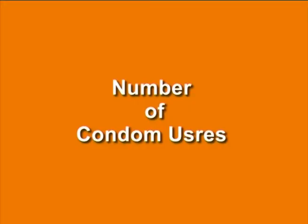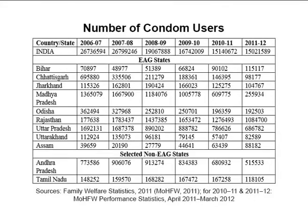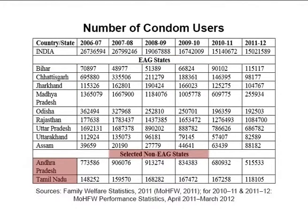Number of condom users: Table 9 on your screen shows that there has been a drop in the acceptance of condom use in the country, especially after 2007–08. A similar trend has been observed in the EAG states of UP, Madhya Pradesh and Rajasthan. However, Bihar has been an outlier, showing an increase in the acceptance of this method. In the non-EAG states too, the acceptance of this method has declined, especially after 2008.